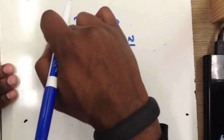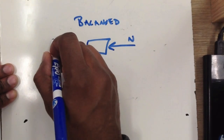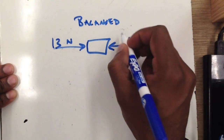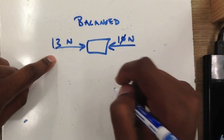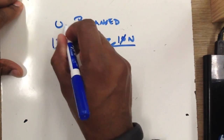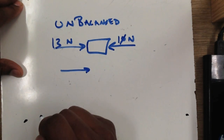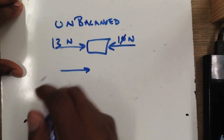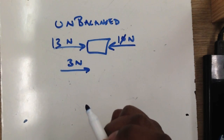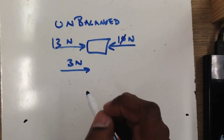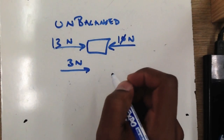Now let's say someone is a little bit stronger. You have someone pushing a dresser with 13 newtons of force and someone on the other side pushing in the opposite direction with only 10 newtons. These forces are unbalanced — 13 on one side and only 10 on the other. The net force is in the direction of the larger force, to the right, and the magnitude is the difference: 3 newtons. If forces are balanced, there is no effect on motion; if forces are unbalanced, there will be an effect on motion.